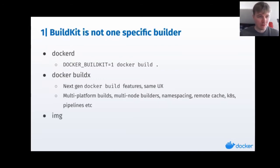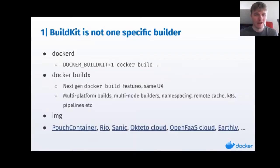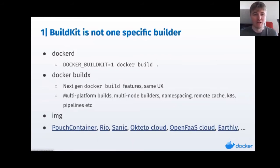Another builder to mention is IMG — a rootless and daemon-less version of BuildKit. If you have allergies against running daemons, you can just take the IMG binary, drop it into a Linux machine, and do BuildKit builds with no root. There are also a bunch of other tools listed here — all of those define some kind of build interface of their own, but in the backend what gets executed is BuildKit.